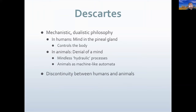Descartes also had an explanation of animal behavior. He thought the pineal gland was special because he believed it was only found in the human brain and not in animal brains — a mistake, since it's very small and difficult to find. Based on this observation, he concluded that animals do not have a mind, they don't have reason, logic, or free will, and therefore animal behavior would be more mindless and robotic.